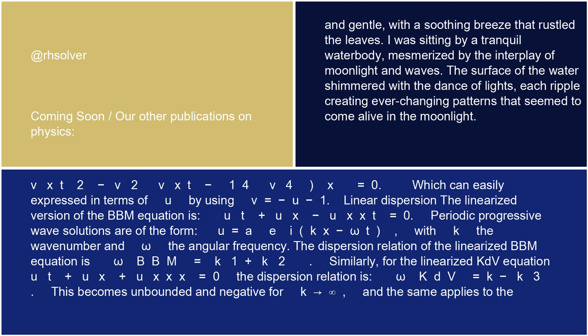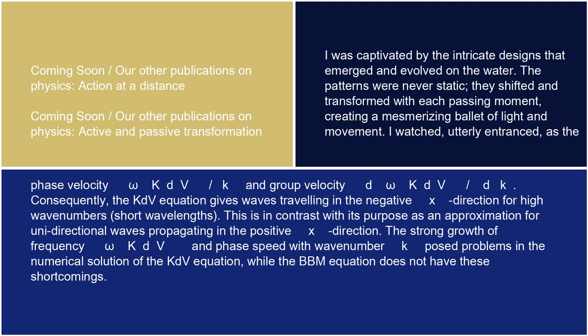The dispersion relation of the linearized BBM equation is ωBBM = k/(1 + k²). Similarly, for the linearized KdV equation, ut + ux + uxxx = 0, the dispersion relation is ωKdV = k - k³. This becomes unbounded and negative for k → ∞, and the same applies to the phase velocity ωKdV/k and group velocity dωKdV/dk.